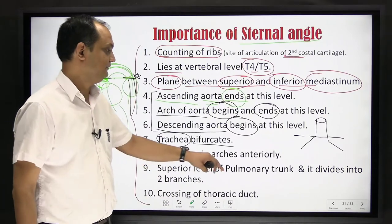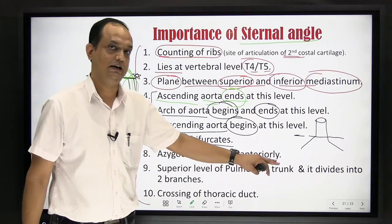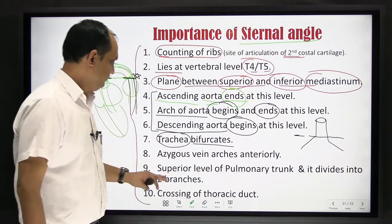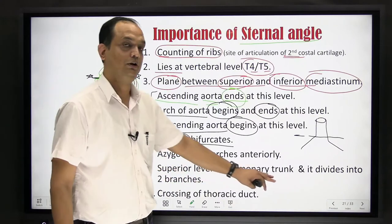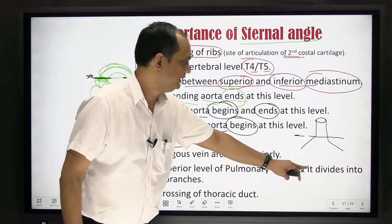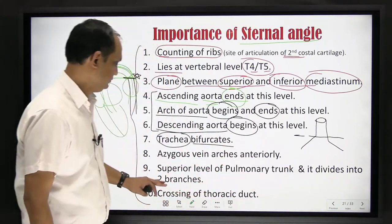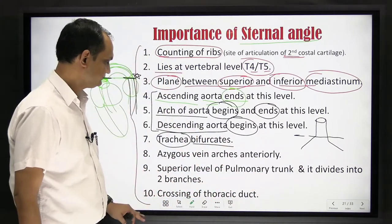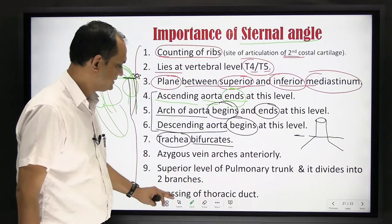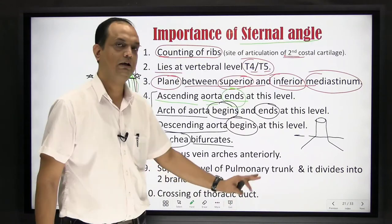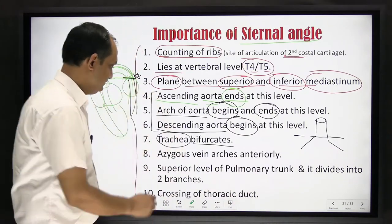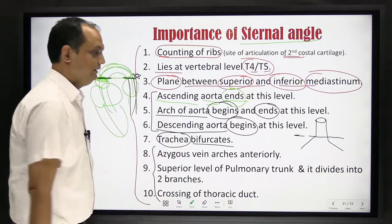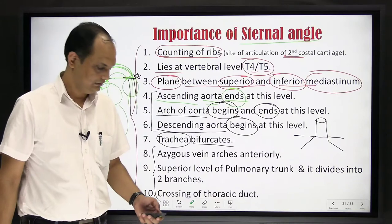Then we have the azygous vein which arches anteriorly, we have the superior level of the pulmonary trunk which divides into two branches, and lastly the crossing of the thoracic duct. I will show all these things one by one in the diagram.